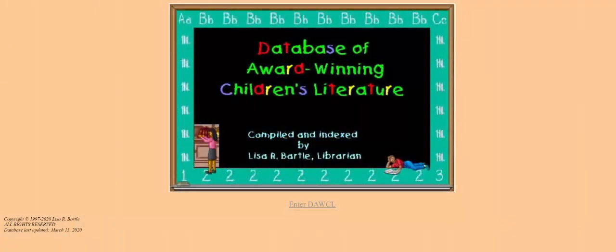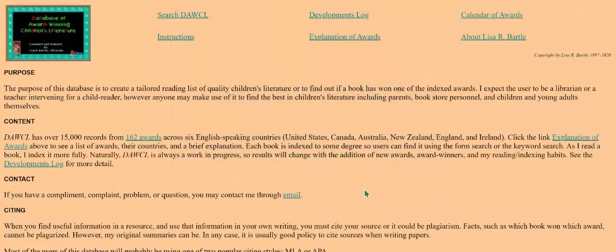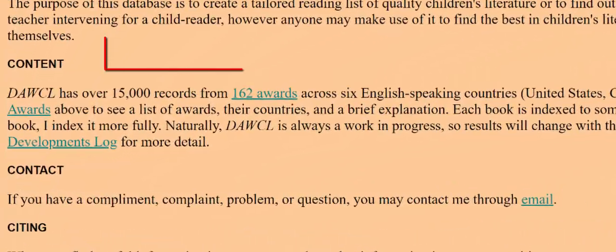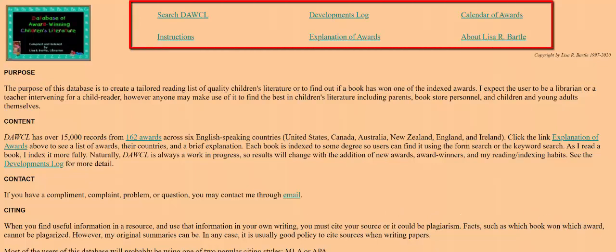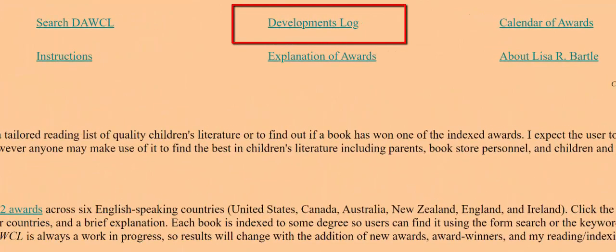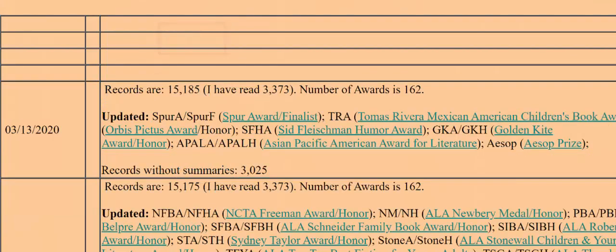Once on the DAWCL homepage, click the Enter DAWCL link or the large graphic. This initial screen will tell you the number of awards in the database and the approximate number of records. Use the navigation across the top for the different areas of the site. The developments log documents each time the database is revised with new indexing, when newly announced award-winning books are added, or entirely new awards are added. It also shows the exact number of records in the database and how many records are lacking summaries, which influences the accuracy of the results.